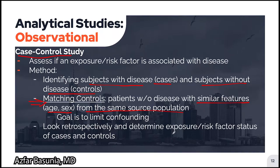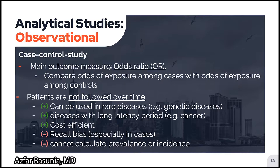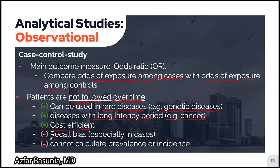After cases and matched controls are identified, researchers retrospectively determine the exposure or risk factor status of both cases and controls. The main outcome measure of a case control study is the odds ratio, which compares the odds of exposure among cases with the odds of exposure among controls. The three principal advantages include studying rare diseases such as genetic diseases, diseases with a long latency period such as cancer, and being very cost efficient. One big disadvantage is recall bias, when past recall of exposure events differs significantly between cases and controls. Another disadvantage is that you cannot calculate prevalence or incidence directly.